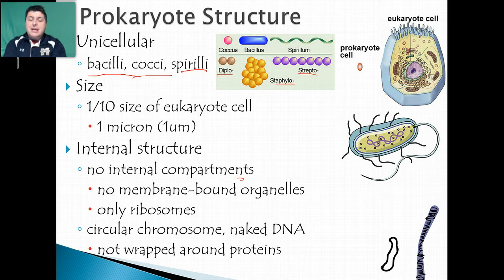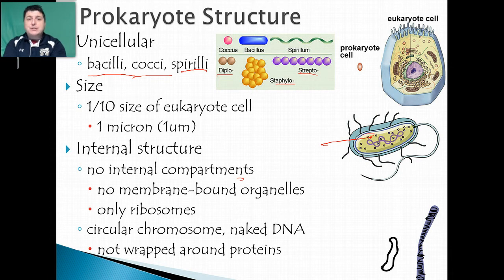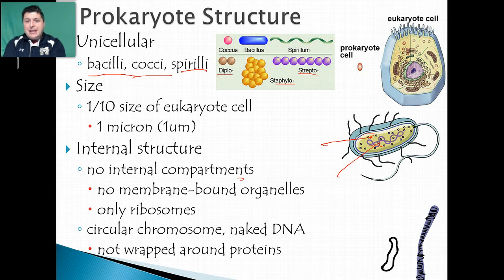For example, streptococcus is the bacteria that causes strep throat — if we looked at it under a microscope it would be chains of little spheres. All bacteria are very, very small — about one tenth the size of a eukaryotic cell, about one micron or one micrometer in size. If we looked inside a typical prokaryote we wouldn't see any internal compartments; they have no membrane-bound organelles. The only things floating around in there are ribosomes, because all cells need to produce protein. Also floating in the cytoplasm is their DNA, concentrated in a region called the nucleoid. That DNA is a little different from eukaryotic DNA in that it's naked — it's not wrapped around histone proteins.